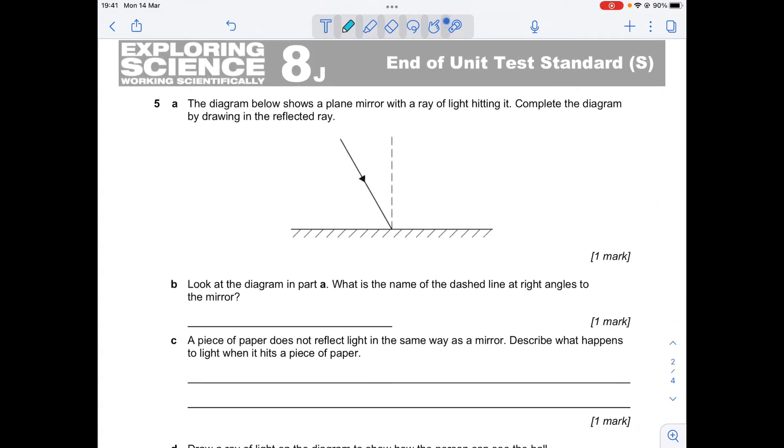Number five. The diagram below shows a plain mirror with a ray of light hitting it. Complete the diagram by drawing the reflected ray. Here was me, all smug.